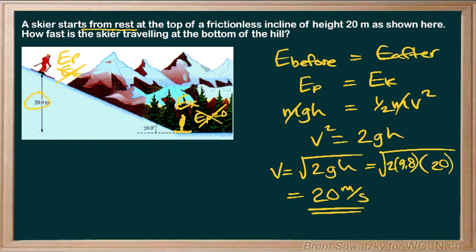With wind resistance not being considered, nor the friction of the hill itself, we would end up with 20 meters per second at the bottom. From a reality point of view, there would be a little wind resistance and a little bit of friction on that hill. Even if it's nice icy snow, it would be very small friction, but there would be some. So in the real world, the speed is going to be just a bit under 20, depending on the snow conditions — really slippery and it's just a tiny bit under 20; a little sticky snow and it would be more under 20.